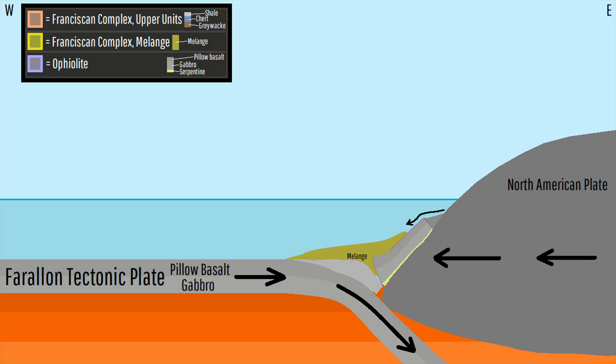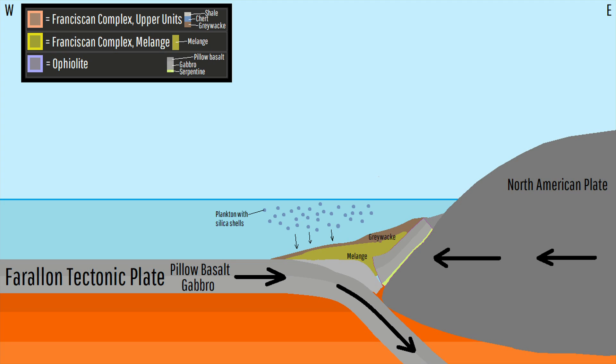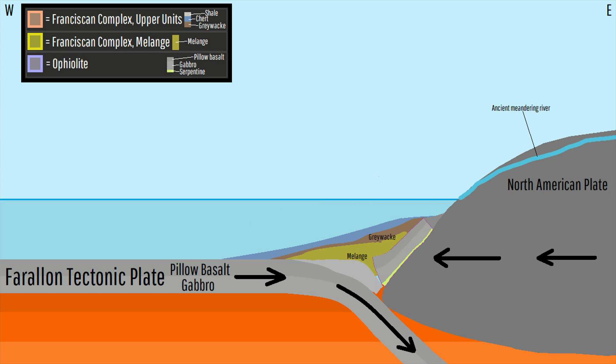Later, turbidity currents on the continental shelf of the North American plate deposited material which over time formed the sandstone known as greywacke. Hard silica parts from dead plankton sank to the bottom forming a layer of chert, and rivers deposited fine silt and clay-sized particles forming a layer of shale.